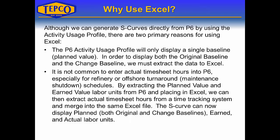Why do we use Excel to build S-curves instead of P6? We can generate S-curves directly from P6 using the activity usage profile, but there are two primary reasons for using Excel. First, the P6 activity usage profile will only display a single baseline. To display both the original and change baselines, we must extract data to Excel. Second, it's not common to enter actual timesheet hours into P6 — especially for refinery or offshore turnaround schedules. By extracting planned and earned value labor units from P6 into Excel, we can merge in actual hours from a time tracking system.